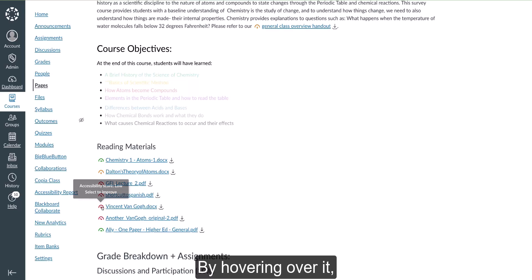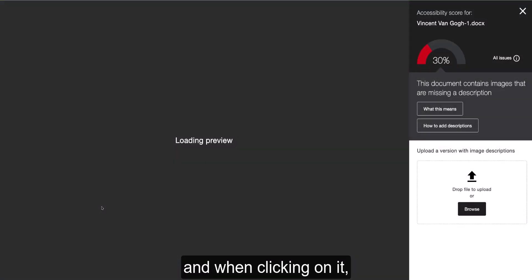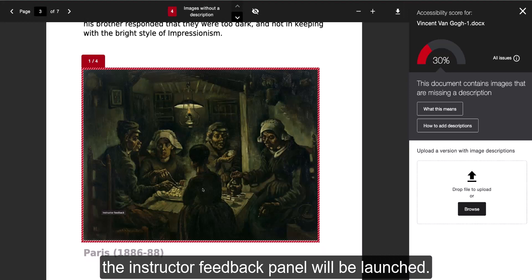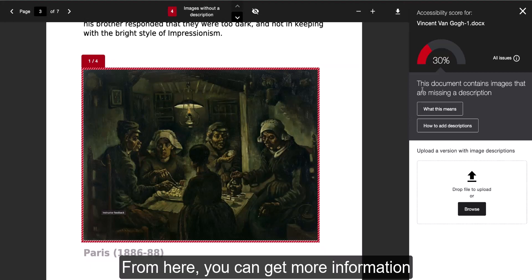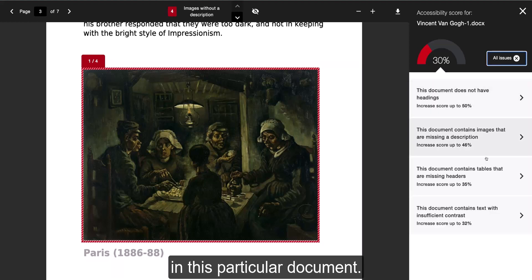By hovering over it, you'll be able to see the accessibility score for this content. When clicking on it, the instructor feedback panel will be launched. From here, you can get more information about all of the issues that have been found in this particular document.